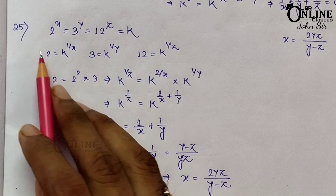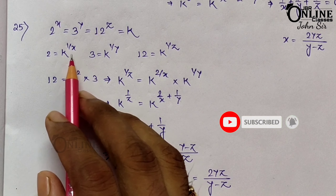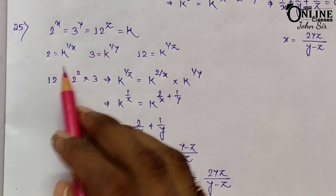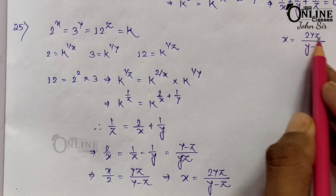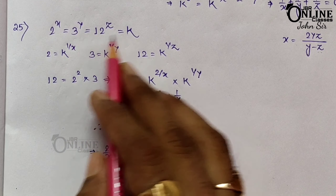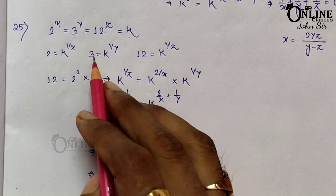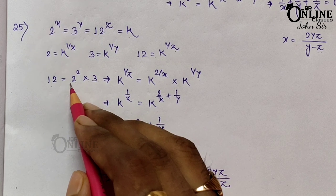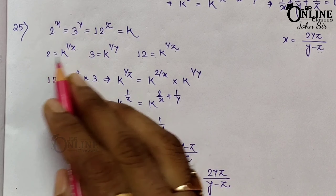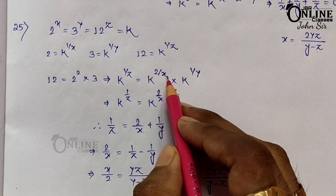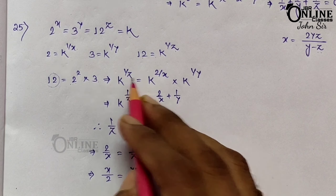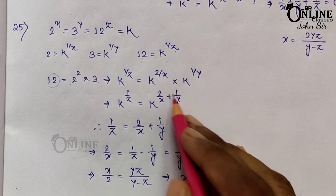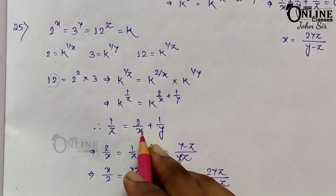Sum 25 (last sum): 2^x = 3^y = 12^z; prove x = 2yz/(y−z). Let each equal k: 2 = k^(1/x), 3 = k^(1/y), 12 = k^(1/z). Since 12 = 4×3 = 2^2 × 3: k^(2/x) × k^(1/y) = k^(1/z), so 2/x + 1/y = 1/z. Then 2/x = 1/z − 1/y = (y−z)/(yz). Reciprocating and multiplying: x = 2yz/(y−z). If you liked this video please share it and subscribe to the channel.